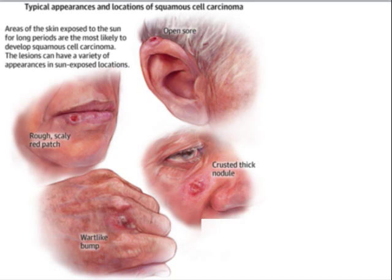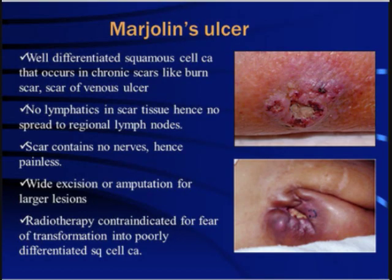Other conditions which can lead to squamous cell carcinoma are scar areas. Well-differentiated squamous cell carcinoma occurs in chronic scars like burn scars and scars of venous ulcers. There are no lymphatics in scar tissue, hence no spread to regional lymph nodes. Scar contains no nerves, hence painless. Wide excision or amputation is done for larger lesions, and radiotherapy is contraindicated for fear of transformation into poorly differentiated squamous cell carcinoma.